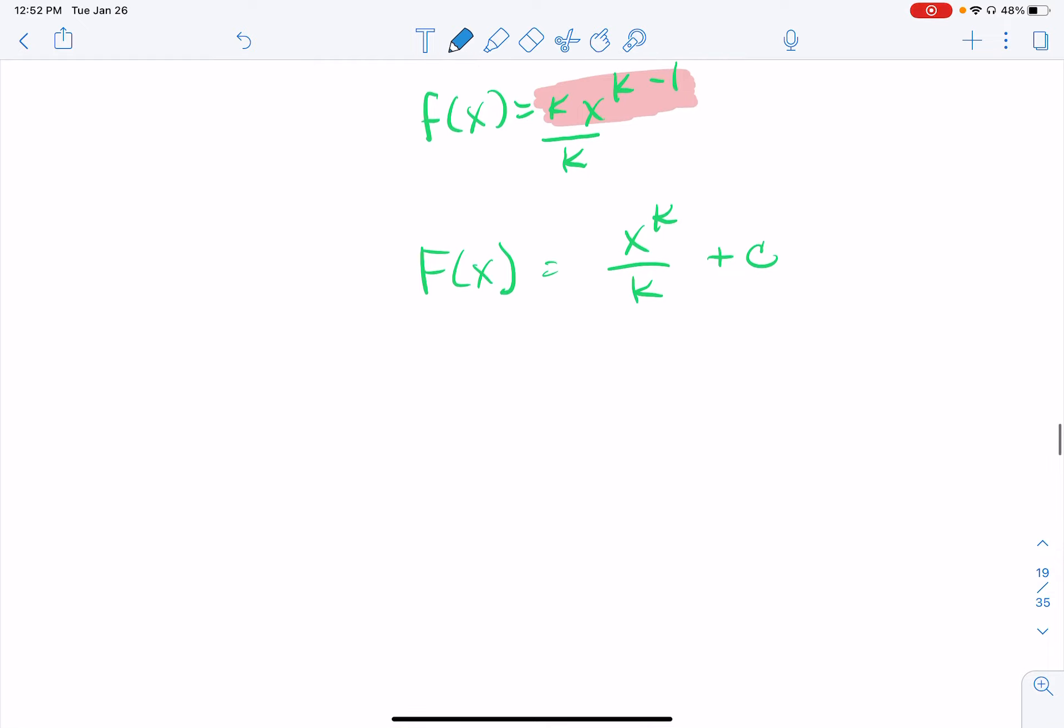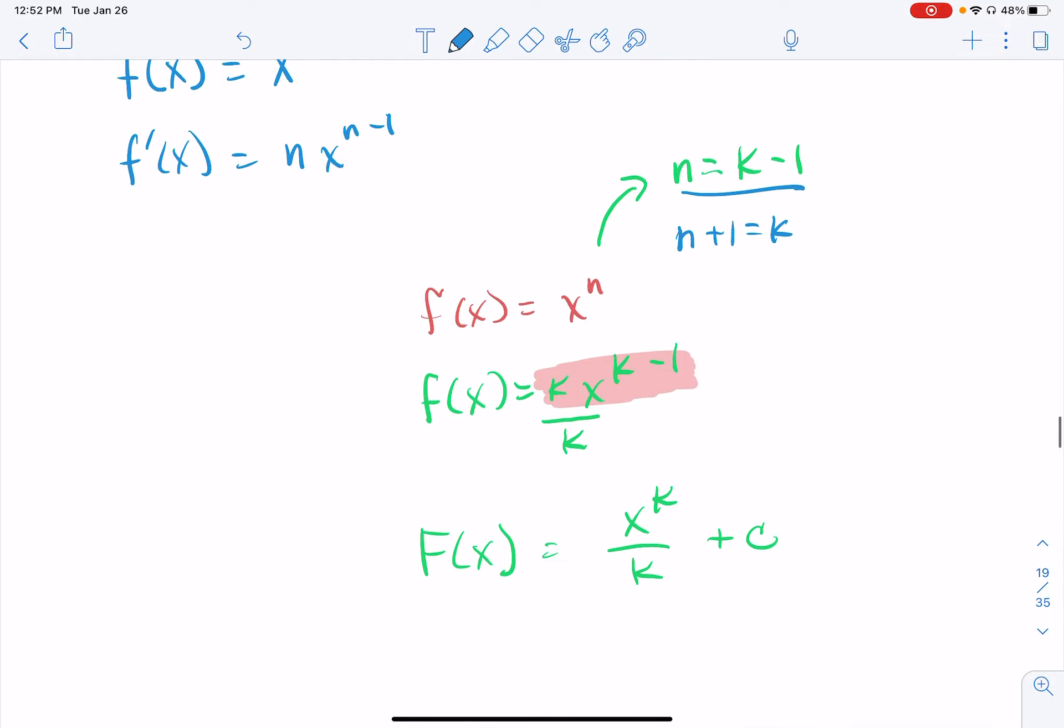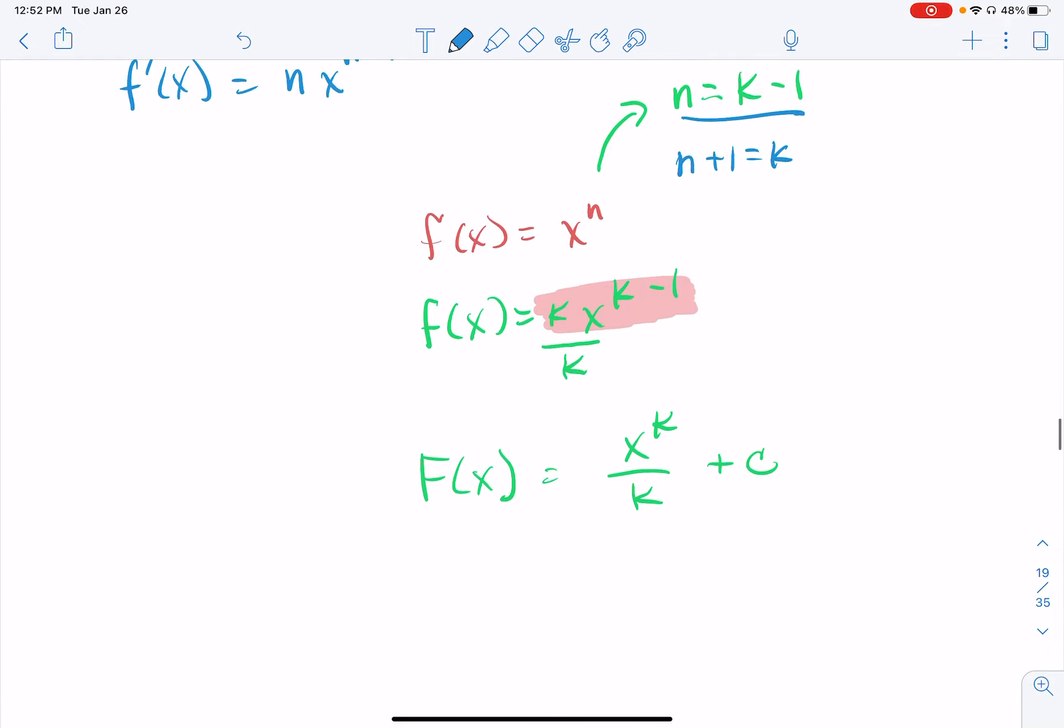Everywhere I have a k in this antiderivative function, I'm going to replace it with an n plus 1. So my real antiderivative should be equal to x to the n plus 1 divided by n plus 1 plus c.